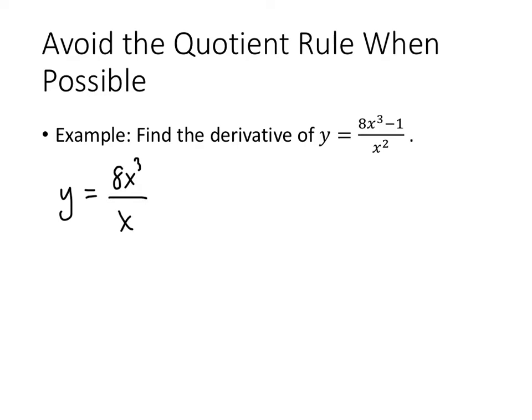So I can write it as 8x cubed over x squared minus 1 over x squared. And I can simplify that even further. x cubed over x squared is simply x. And I can write 1 over x squared as x to the minus 2. And what you might recognize here is that we don't need any fancy quotient rule to take the derivative now.